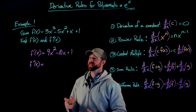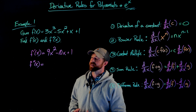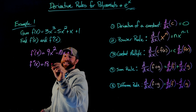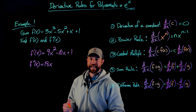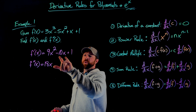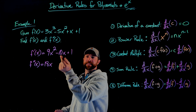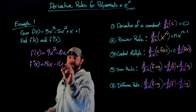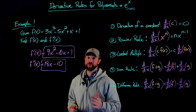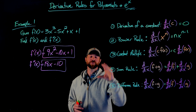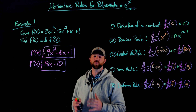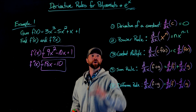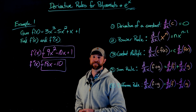Following the same logic, I'm now going to differentiate the first derivative to find the second derivative. When I differentiate 9x squared, I bring that exponent down to get 18x. For negative 10x, differentiating any linear term just leaves the coefficient, so that gives negative 10. These rules make finding the derivatives of polynomials incredibly easy — we no longer need the limit definition.